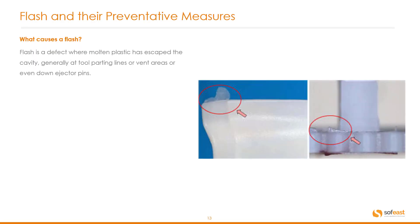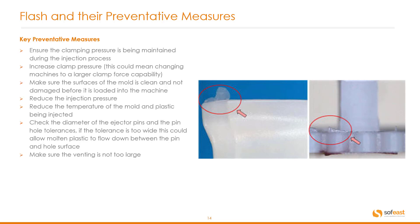A very common problem on plastic molded parts is flash. Flash is a defect where the molten plastic has escaped the cavity, generally at the parting lines, vent areas, or even down ejector pins. Key preventative measures: ensure the clamping pressure is being maintained during the injection process; increase clamp pressure, which could mean changing machines to a larger clamp force capability; ensure the surface of the mold is clean and not damaged before it is loaded into the machine; ensure correct injection pressure and temperature of the mold and plastic being injected; ensure the diameter of the ejector pins and the pin hole tolerances are correct — if the tolerance is too wide, molten plastic can flow down between the pin and the hole surface; and make sure the venting is not too large.